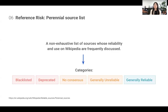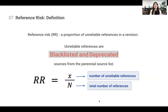For the second index, Reference Risk, we utilize the Perennial Sources List, which is a community-maintained, non-exhaustive list of sources whose reliability and use on Wikipedia are frequently discussed. This list has five categories: blacklisted, deprecated, no consensus, generally unreliable, and generally reliable. The definition of this index is the proportion of unreliable references in a revision — specifically, the proportion of blacklisted and deprecated sources from the Perennial Sources List among all references present in a given revision.